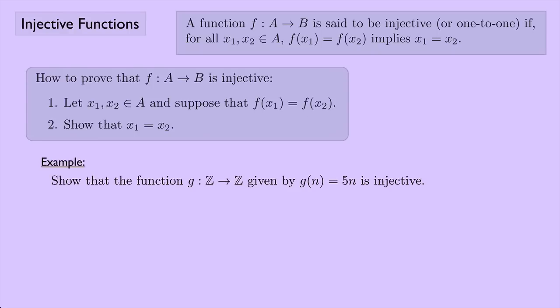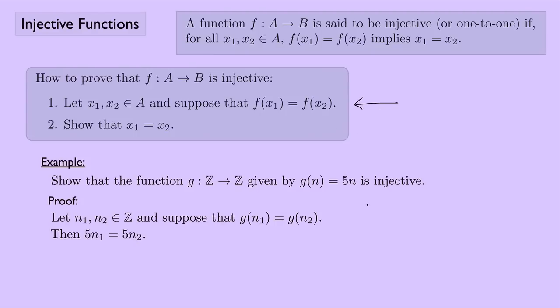Let's look at another example. Show that the function g from the integers to the integers given by g(n) equals 5n is injective. Here's the proof. Step one: let n1 and n2 be elements of ℤ, and suppose that g(n1) equals g(n2). Step two: if g(n1) equals g(n2), that means 5n1 equals 5n2. But this means that n1 equals n2 — just divide by 5 on both sides. So g must be injective.